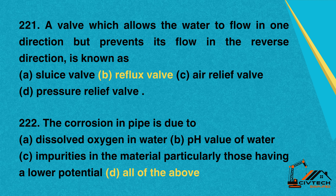Question 222: The corrosion in pipe is due to. A. Dissolved oxygen in water. B. pH value of water. C. Impurities in the material, particularly those having a lower potential. D. All of the above. Correct option: D. All of the above.